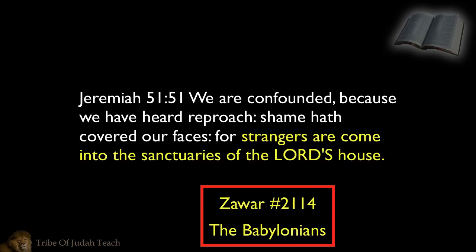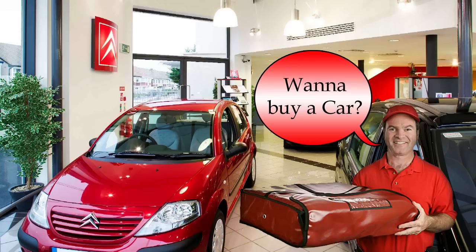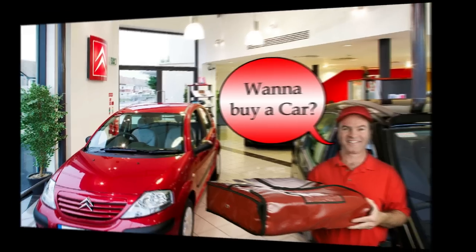Earlier we read Jeremiah 51 and 51. The Babylonians were called Zawar strangers because they came inside the sanctuaries where the Israelites dwelt. Anybody that came into the sanctuaries that was not an Israelite was considered a Zawar, a stranger. It's just like the pizza guy in the car dealership trying to sell cars — he's in the wrong place and in the wrong position. Now I'm going to show you that the Most High uses the Hebrew word Zawar in the same way. Look at Numbers 1 and 50.